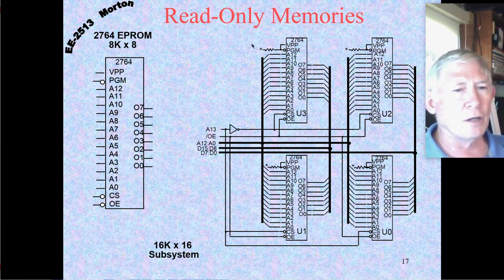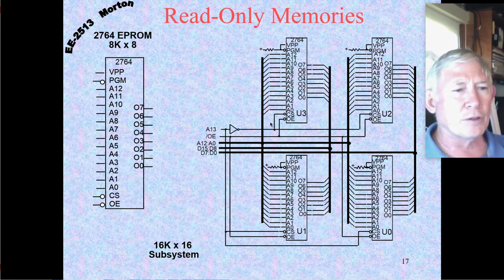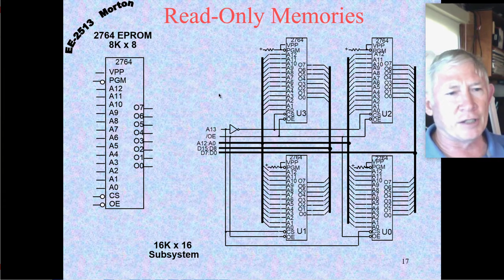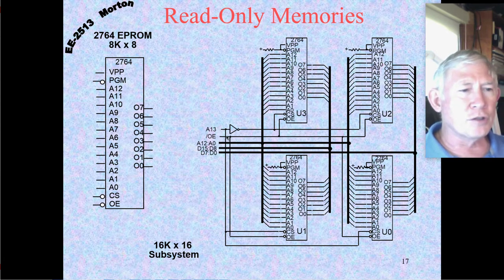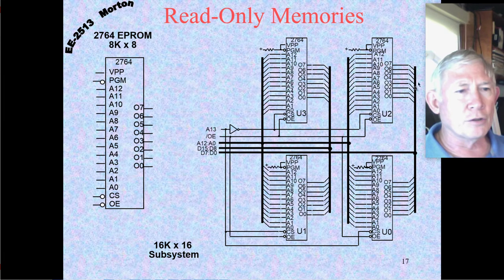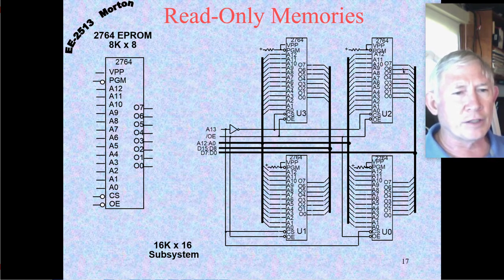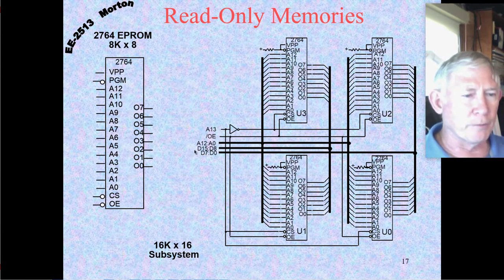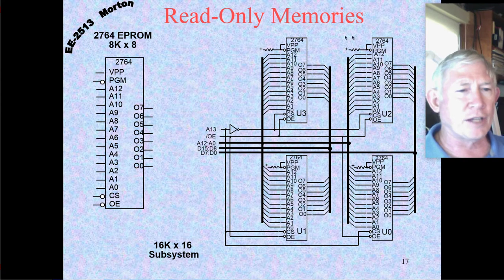Sometimes the BIOS would be in these as well. Usually we'd have a couple of these 2764s — maybe four of them ganged together to give you 16K by 16 bits. The higher-order address line A13 is inverted to two of the pairs so that the bottom pairs go from 0 to 8K and the upper pairs go from 8K to 16K. Eight data lines come from one pair and eight come from the other to give you a full 16 bits of data line. If you needed to boot up a 16-bit processor, you needed a 16-bit ROM — but you could gang these together to make your own 16K by 16-bit word-size ROM.